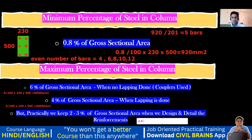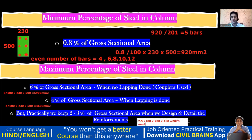So taking 2.5 percent as a practical value: 2.5 ÷ 100 × 230 × 500 = 2,875 mm². This is the steel area we'll target for a 230×500 column in a practical design scenario.